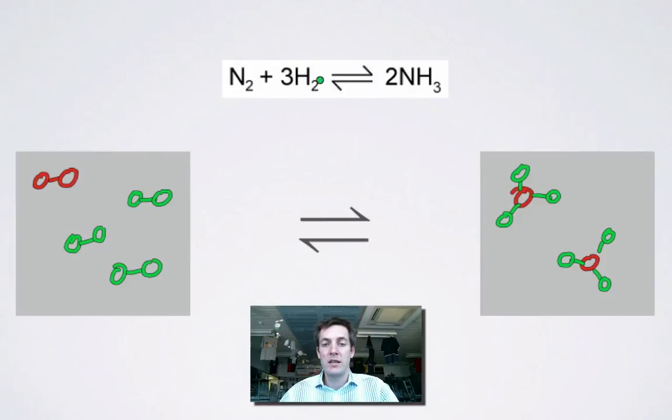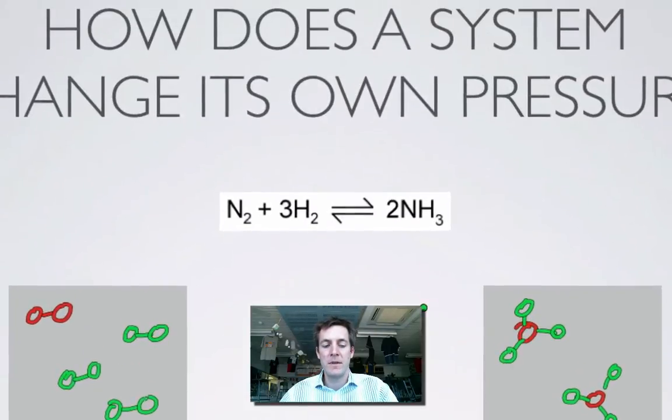So in other words, in this particular example, we'll increase the yield of ammonia, or the position of equilibrium will move to the right if we increase the pressure, because there are fewer moles of gas on the right.